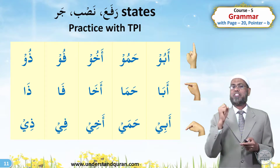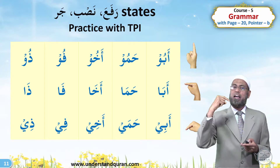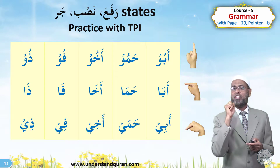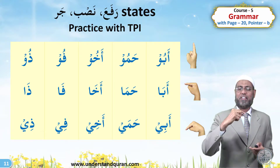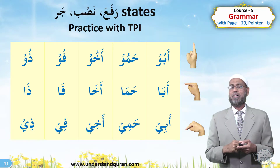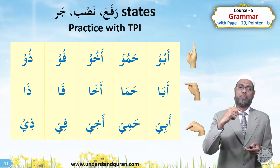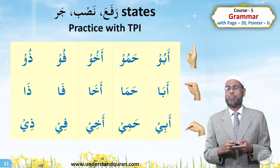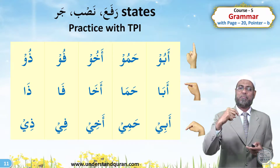Let us practice. Original state: Abu. When affected (Nasab): Aba. After preposition (Jar): Abi. Next: original state Hamu. When affected: Hama. After preposition: Hami. And similarly Akhu, Akha, Akhi.